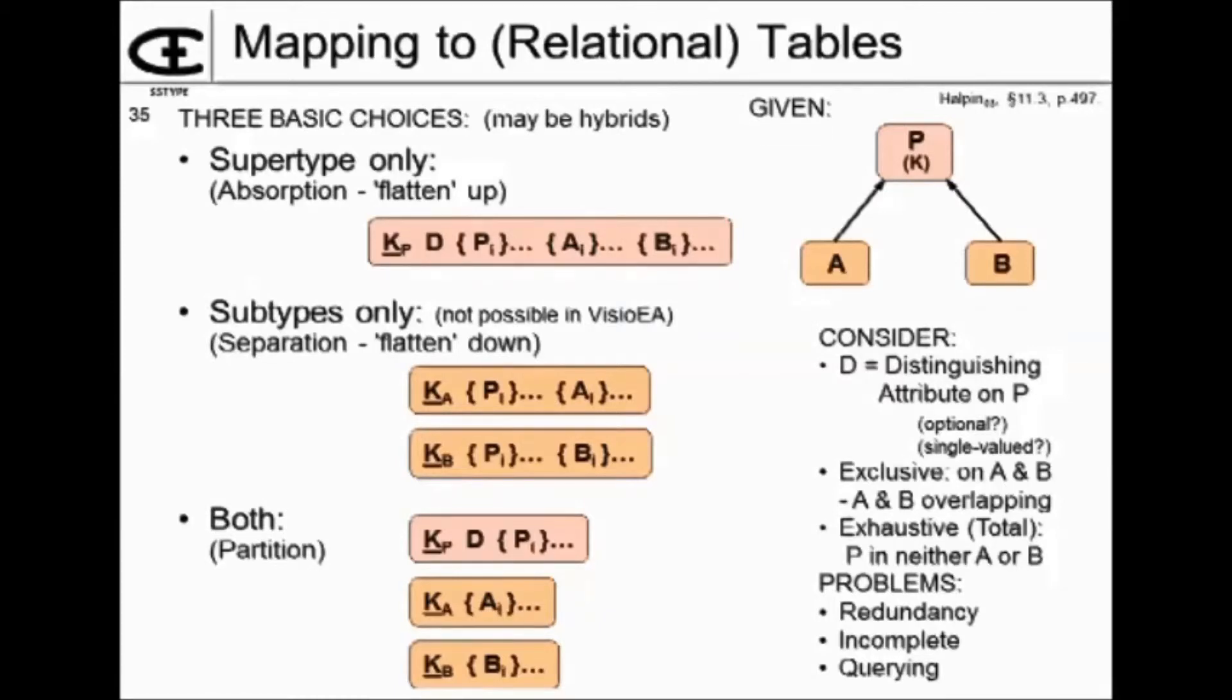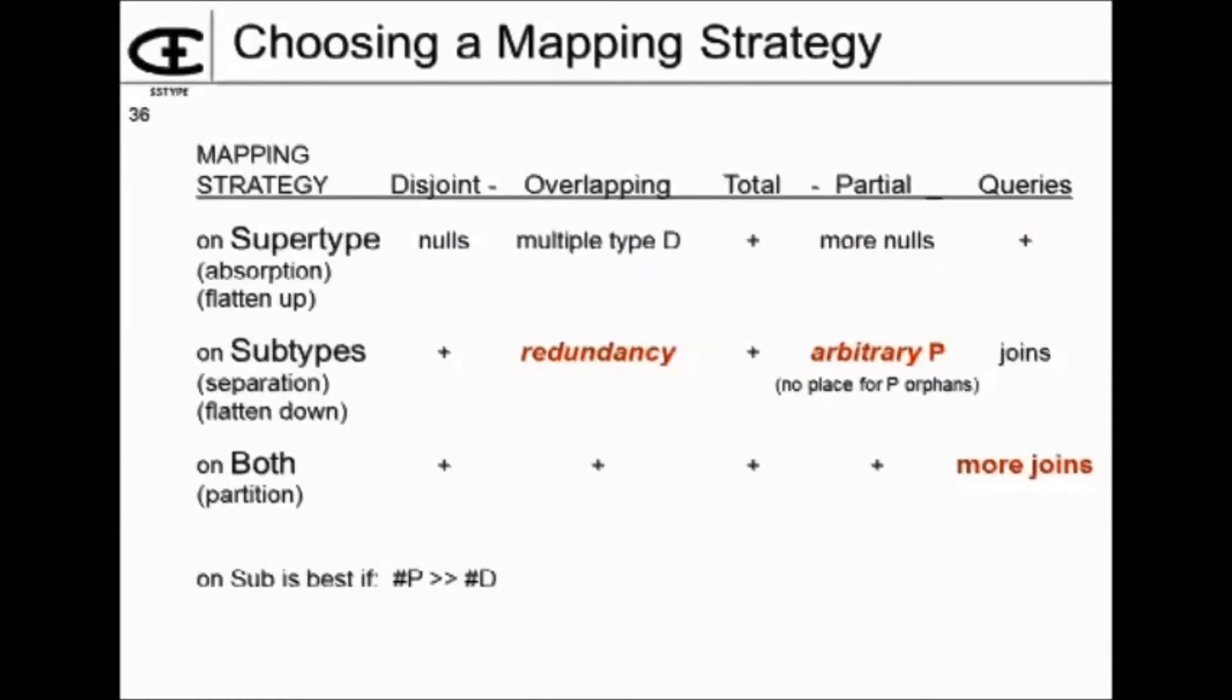And if you do the flattening down, then you can look at your tables and you can see popping out subtype tables. So here are some of the thoughts in choosing this strategy. I've also already talked a little bit about if they're overlapping or exclusive.